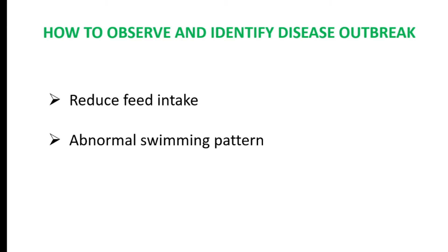Secondly, look for abnormal swimming patterns. You may begin to see your fish lying flat, rubbing against the bottom, net cages, or walls of ponds, jumping out of the water, moving in a circular motion, or losing buoyancy or balance. All these are typical signs of disease. The best time for this observation is early in the morning and in the late evening during feeding, as this gives you insight into whether the fish are comfortable or not.